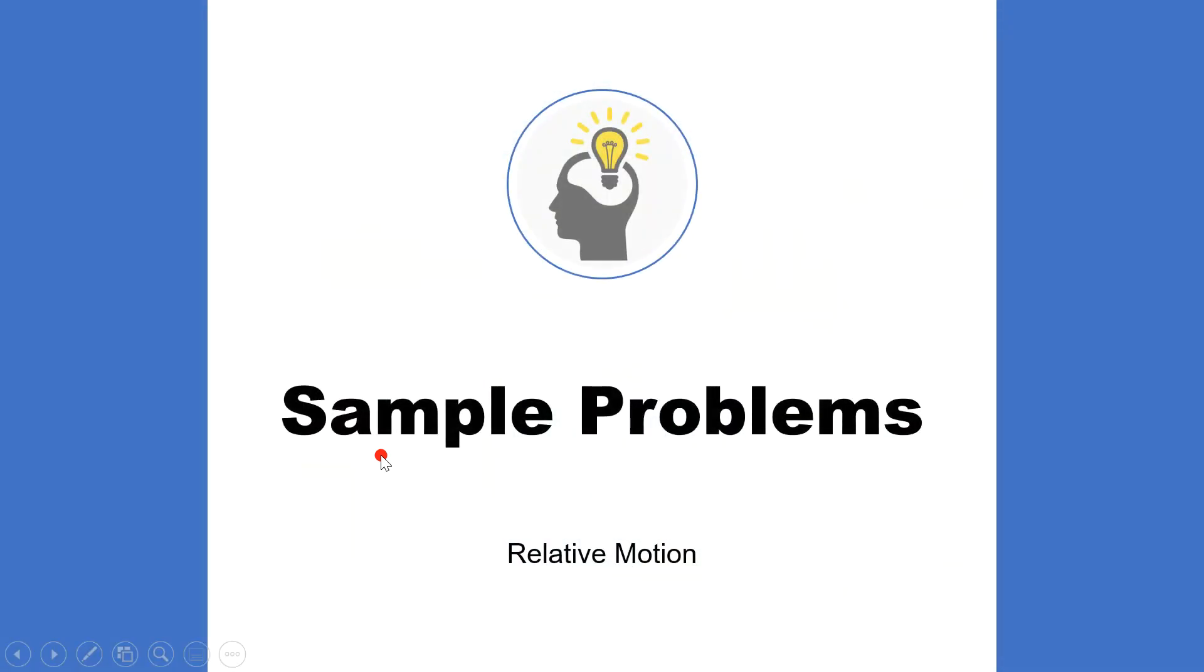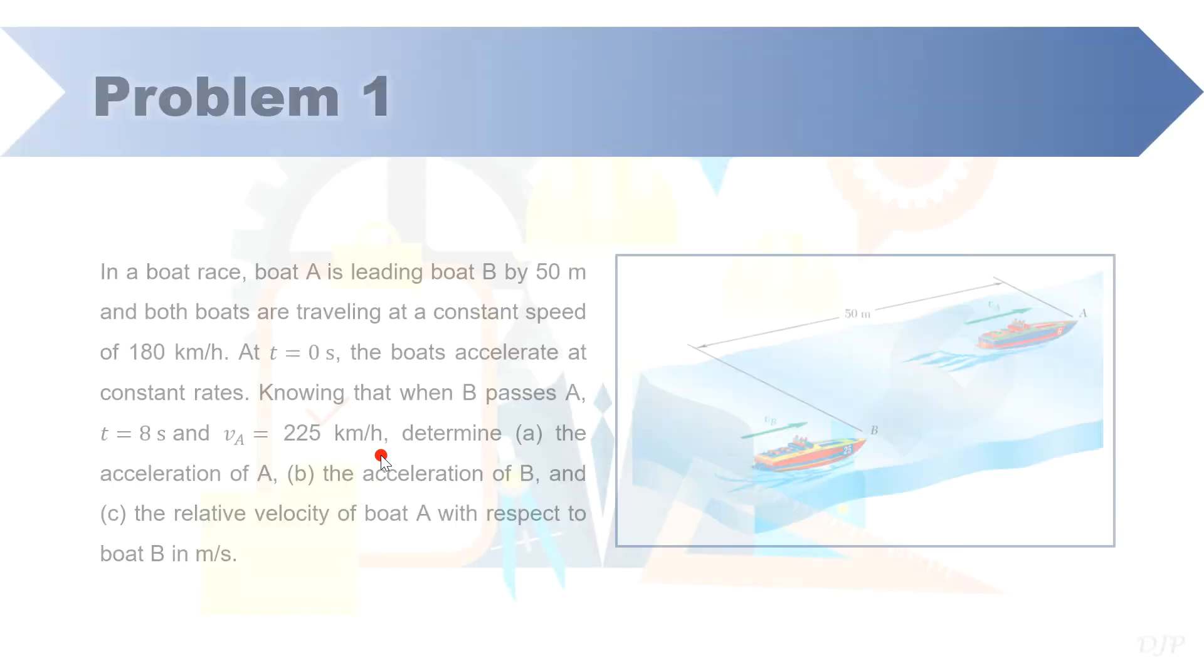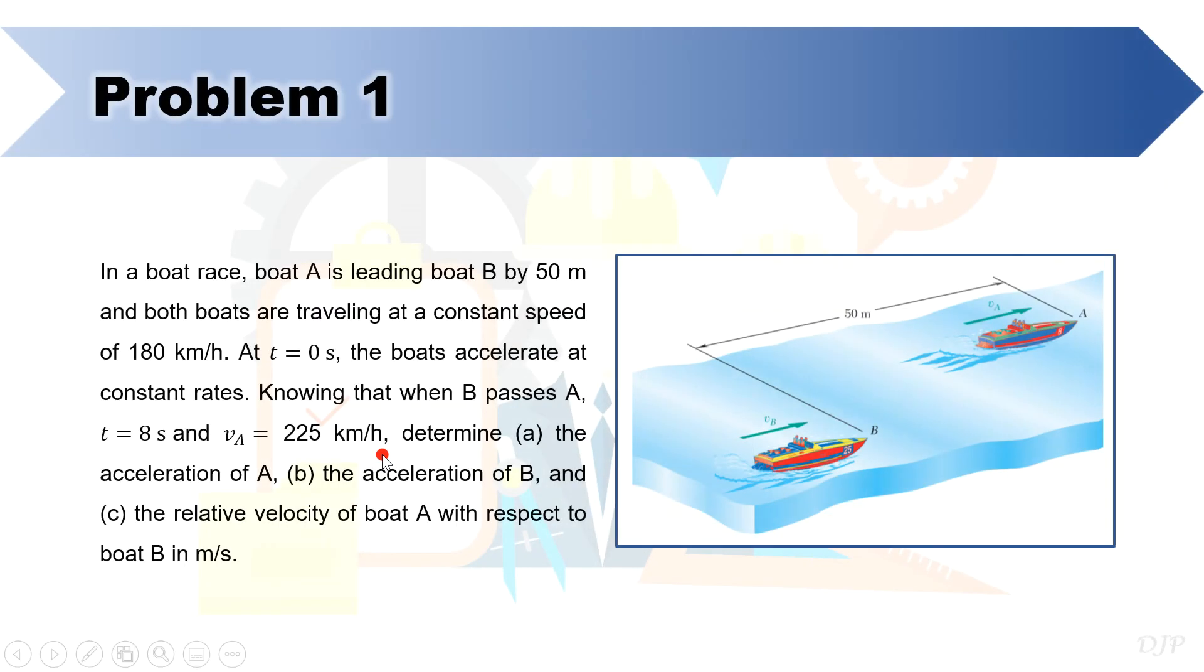Let us now solve some sample problems about relative motion. For our first problem, we may pause the video to read the statement of the problem. Since we have here two boats moving along the same straight direction, let us denote all vectors with that same direction as positive.